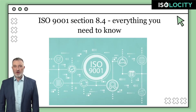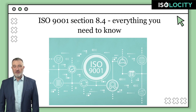ISO 9001:2015 has brought in a lot of changes and supplier management is one of them. Gone are those days when it used to be only a list of suppliers. ISO 9001 Section 8.4 focuses on controlling processes, products, or services that are provided by an external party, i.e. a supplier. Having a proper process for your supplier is essential for your business, and therefore this section is critical to companies that want to have a sound quality management system in place.